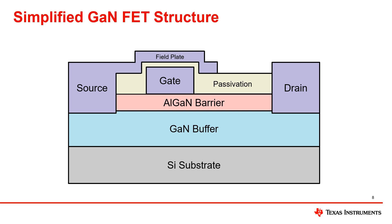GaNFETs require a passivation layer to reduce the effects of surface electron traps between the gate and drain contacts. The benefits of the field plate are an increase of the breakdown voltage and a reduction of the surface electron traps.